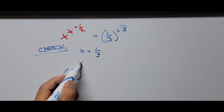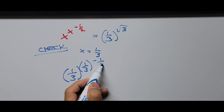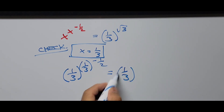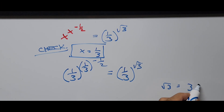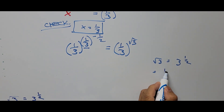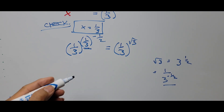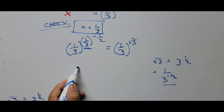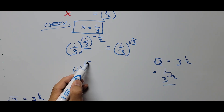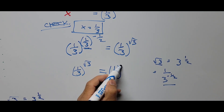So the left side is 1 third raised to 1 third — that's x — raised to negative 1 half. The right side of the equation, using 1 third as the value of x, is 1 third raised to the square root of 3. The square root of 3 is written as 3 raised to 1 half, and the reciprocal gives us 1 over 3 raised to the negative 1 half power. That is the same as the left side, so 1 third raised to 1 third to the negative 1 half equals the square root of 3 — confirming both sides of the equation are equal.